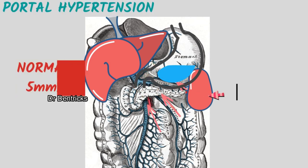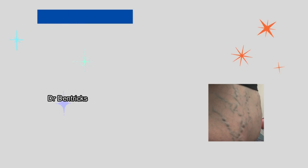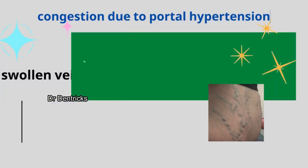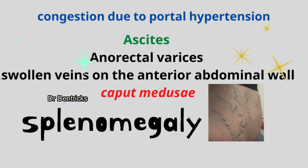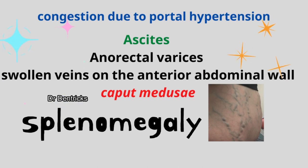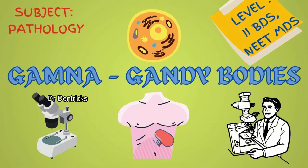This congestion leads to ascites — free fluid in the peritoneum — anorectal varices, distended veins on the anterior abdominal wall also known as caput medusae, and finally splenomegaly, which is the main cause for the formation of these Gamna-Gandhi bodies.